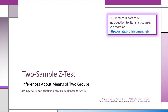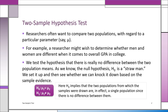In this lecture, we will learn about making inferences about means of two groups — the two-sample z-test. Previously, we examined one-sample tests. Now we're changing things a little bit: we're going to be examining two groups, so-called two-sample tests.